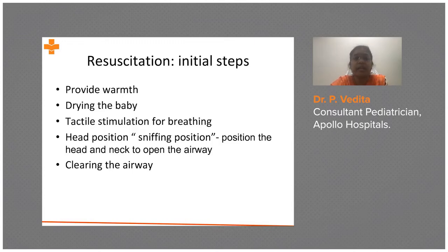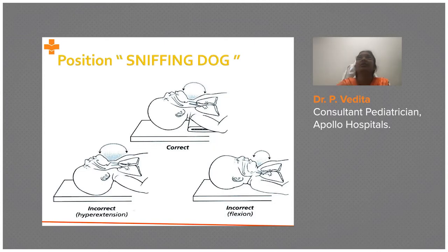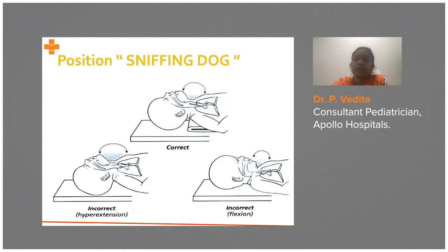If the baby is not crying, then provide tactile stimulation, put the baby in sniffing position, and clear the airway. The sniffing position — you can imagine a dog who is sniffing and breathing deep. The baby is positioned facing toward the sky. To achieve the sniffing position, because in neonates the occipital size is larger, we place a shoulder roll under the shoulders. Hyperextension and flexion are avoided — this is the position which helps the baby to open the airway.